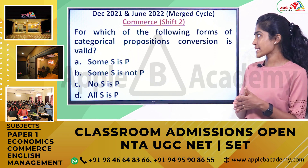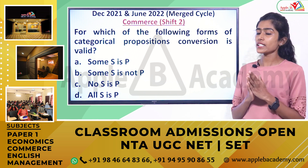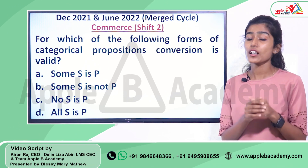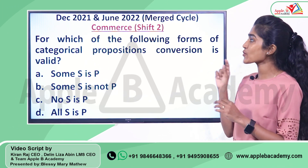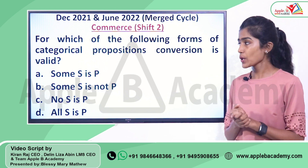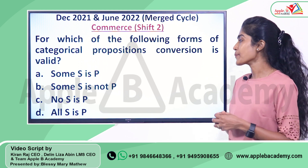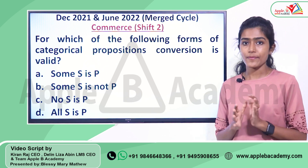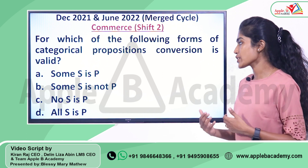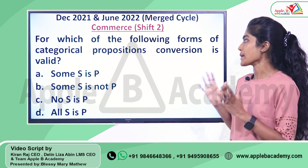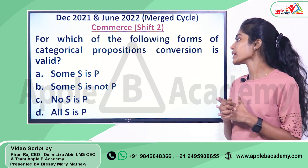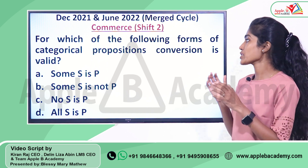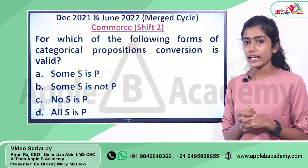So here you have the question. This question was asked in the very recent exam — that is December 2021 and June 2022 merged cycle of NTA-UGC NET — and it was asked for the second shift of commerce. The question is: for which of the following forms of categorical propositions is conversion valid? The options are: some S is P, no S is P, and all S is P. From the given options, we have to identify the forms of categorical propositions which have a valid conversion.